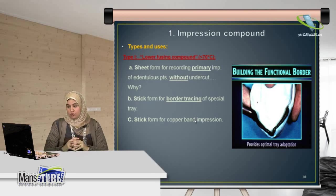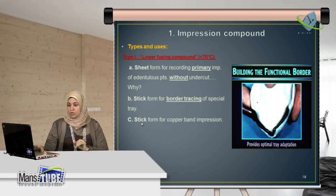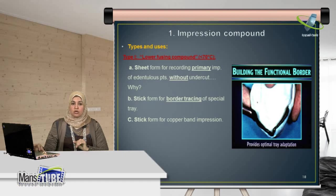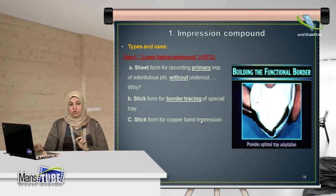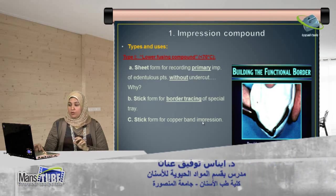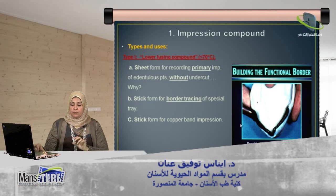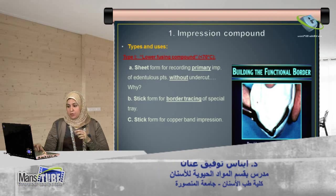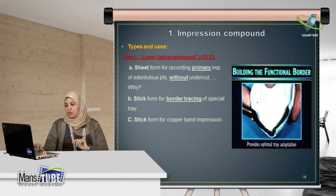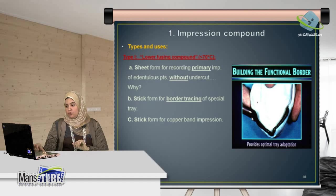The third use of Type 1 is also the stick form, used for recording a copper band impression. The copper band impression is used to take an impression of a single tooth only, by heating the sticks until soft, placing them in a copper band, and pressing it against the tooth to take a primary impression of a single tooth.